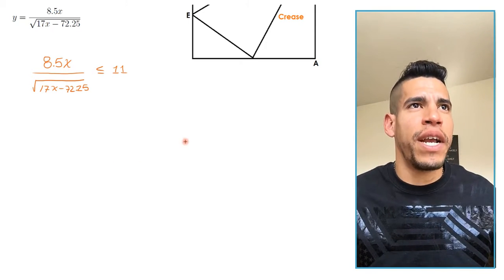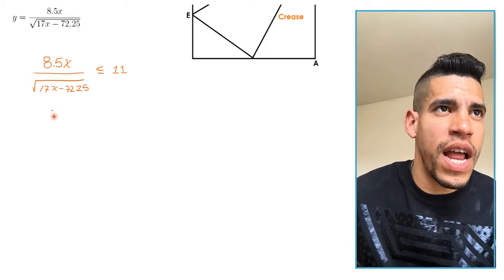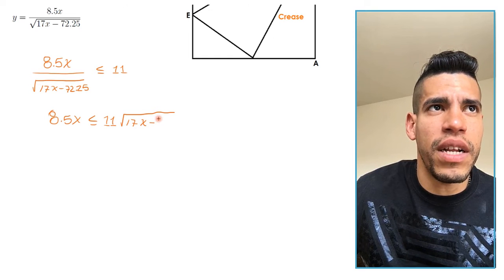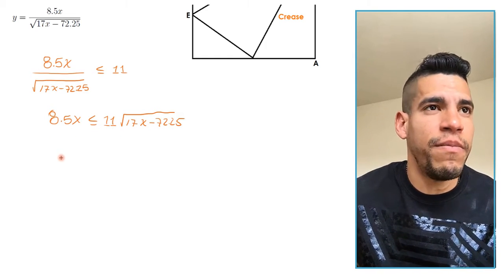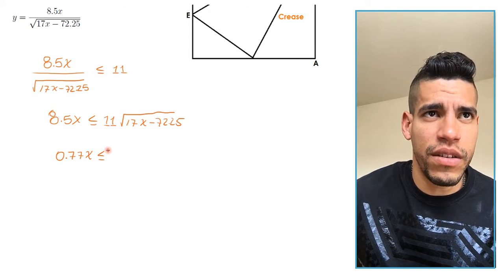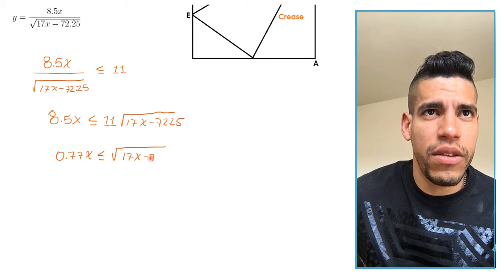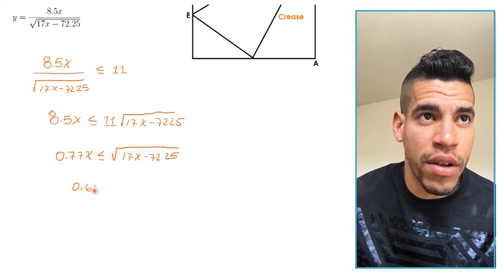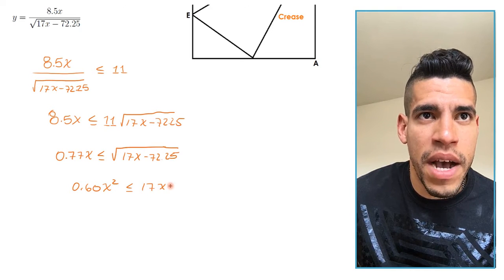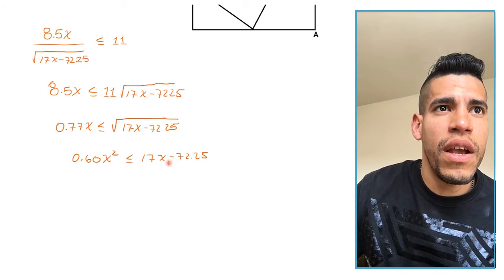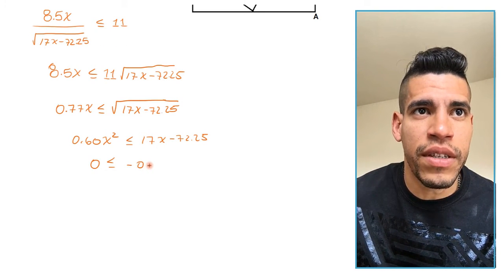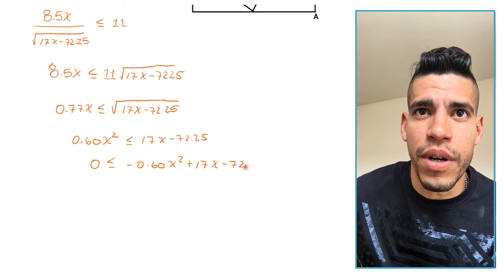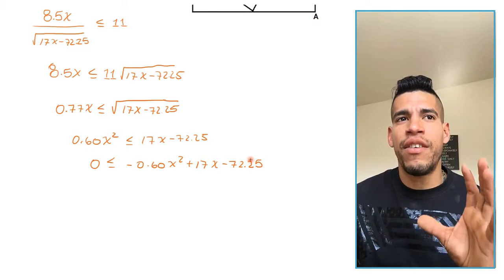Cross-multiplying, we get 8.5x less than or equal to 11 times the square root of 17x minus 72.25. Dividing by 11, that gives approximately 0.77x less than or equal to the square root of 17x minus 72.25. Squaring both sides, the left side becomes approximately 0.6x² and we get 0.6x² less than or equal to 17x minus 72.25. Moving terms to the right: 0 less than or equal to negative 0.6x² plus 17x minus 72.25.